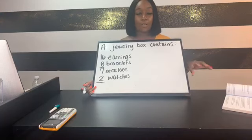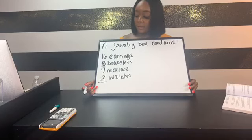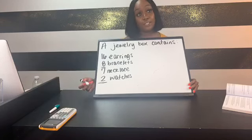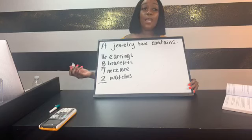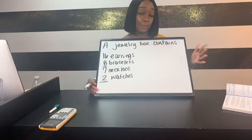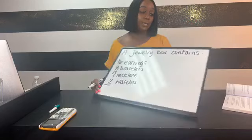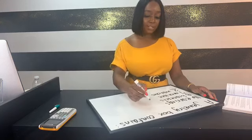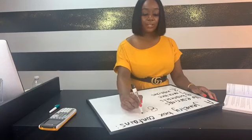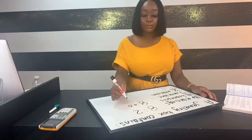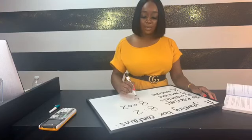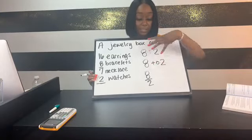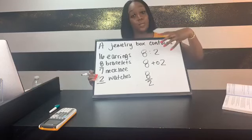Sometimes in question form they may have a ratio written as a fraction, but answer choices may have colons or the word 'to'. So understand that ratios can be written three different ways and you have to be able to recognize that when you see it. So the ratio of bracelets to watches can be written as 8 colon 2, as 8 to 2, or as 8 over 2. These are all the same answer in three different forms because they can give it to you three different ways on your test.